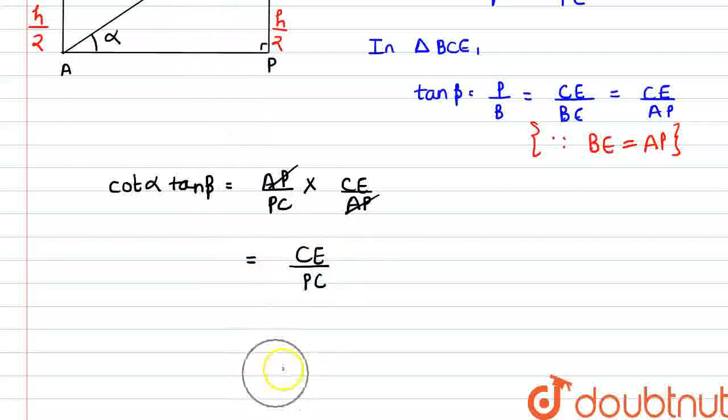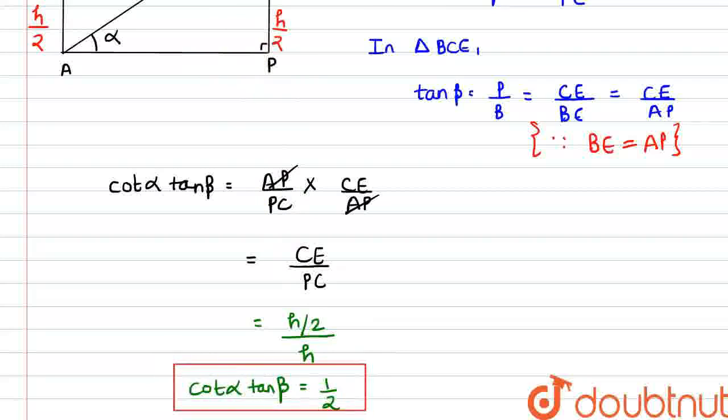And we can see that CE value we have as H by 2. So we have CE is H by 2 and PC is H. So here our final value, cot alpha into tan beta equals 1 by 2. So this is our final answer. Thank you.